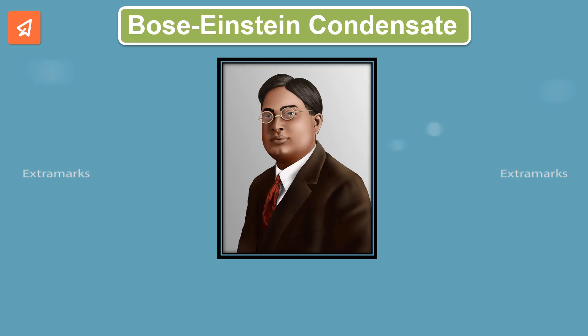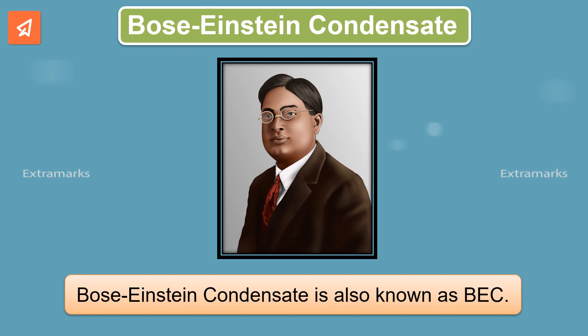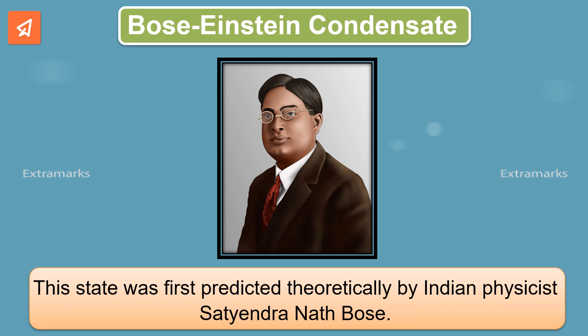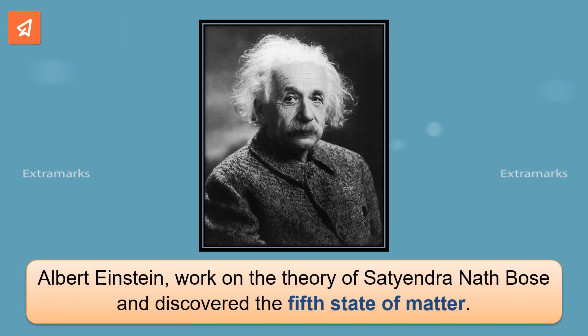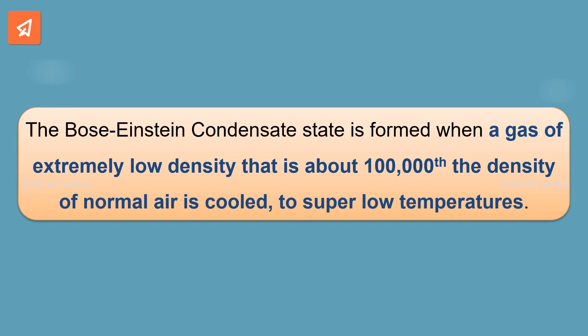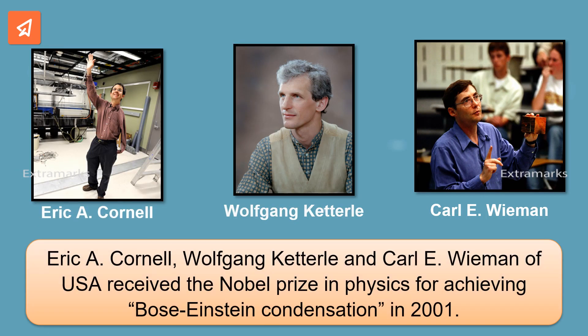The fifth state of matter is called Bose-Einstein condensate, also known as BEC. It was first predicted theoretically by Indian physicist Satendranath Bose. Albert Einstein continued work on the theory of Satendranath Bose and discovered the fifth state of matter. The Bose-Einstein condensate state is formed when a gas of extremely low density, that is about 100,000th the density of normal air, is cooled to super low temperatures. Eric A. Cornell, Wolfgang Ketterle and Carl Wiemann of USA received the 2001 Nobel Prize in Physics for achieving Bose-Einstein condensation.